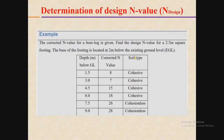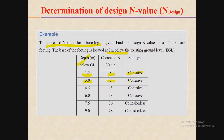Let us solve a practical numerical problem on the same topic. The statement of the problem is: the corrected N values for a borehole are given — find the design N value for a 2.5-meter square footing whose base is located at a depth of 2 meters below the existing ground level. The table gives corrected SPT N values at different depths: at 1.5m depth the N value is 8 (cohesive), at 3m depth the N value is 7 (cohesive), at 4.5m the N value is 15 (cohesive), and at 6m the N value is 18 (cohesive).